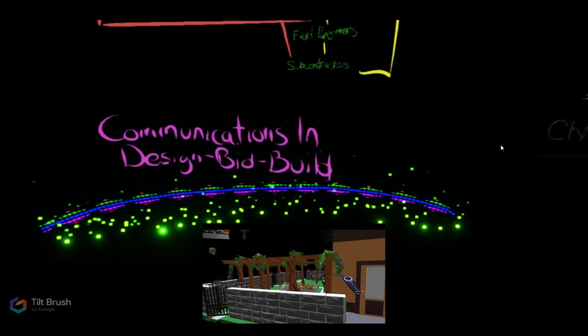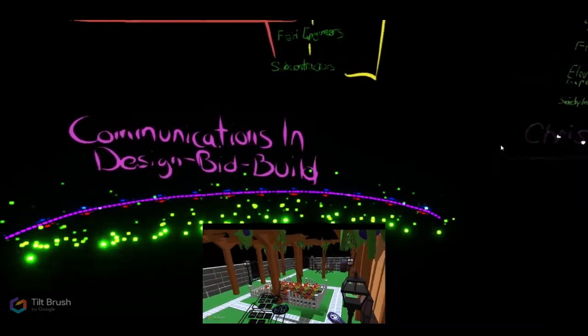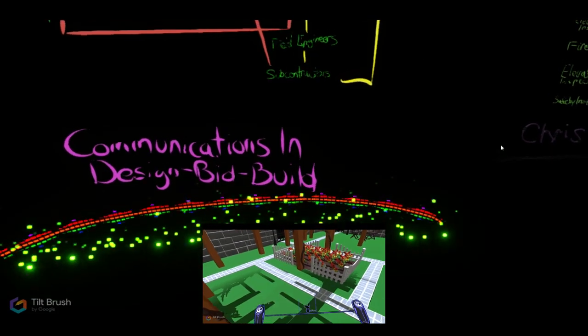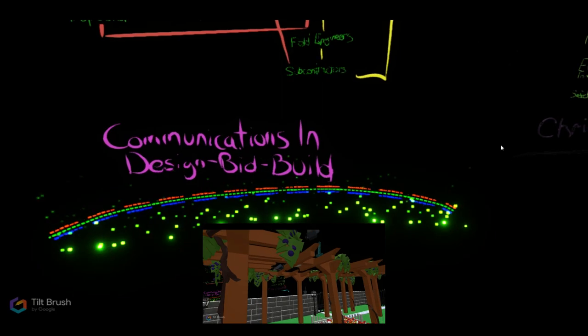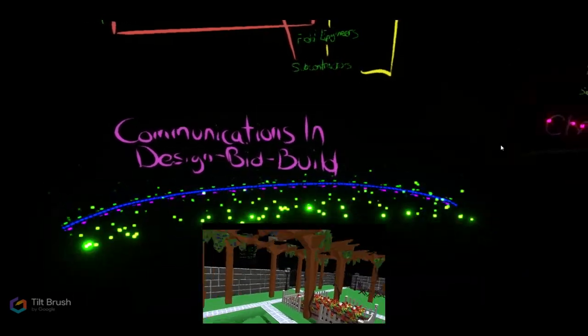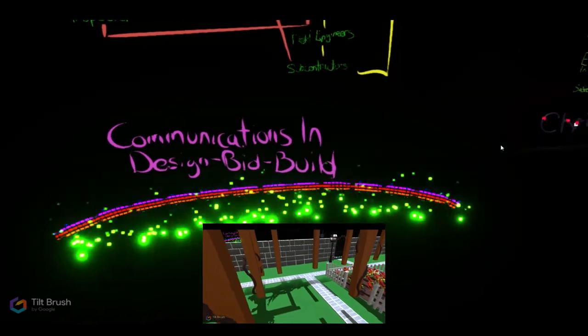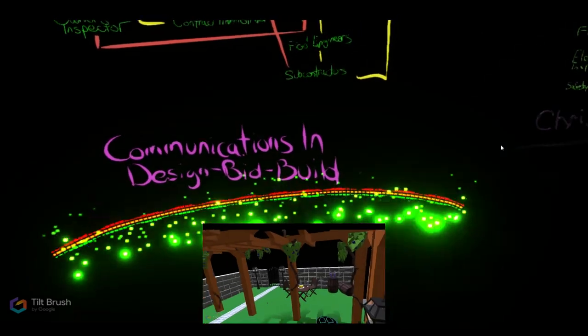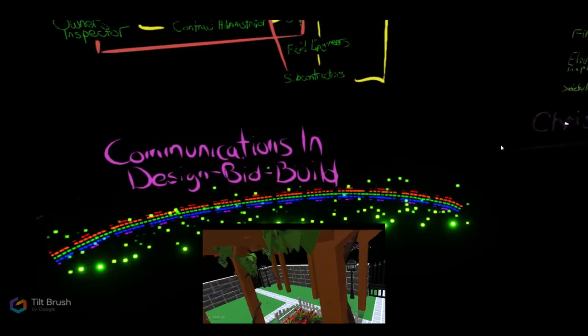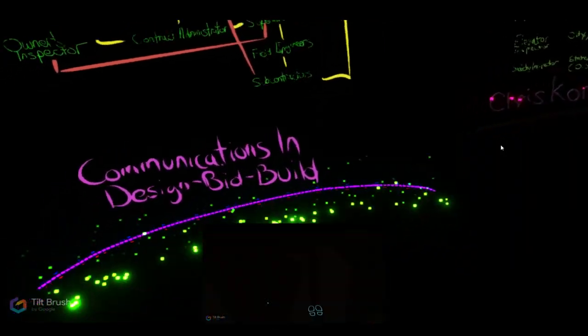Above this there is an illustration that illustrates a communications matrix indicating direct or contractual lines of communication and indirect or non-binding communications. This is one possible communications matrix, with other matrices being utilized when other contractual agreements are chosen.